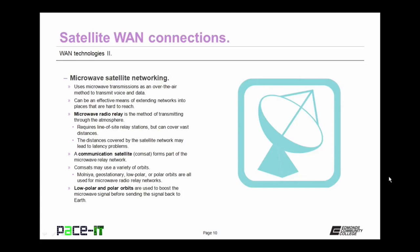Because of the distances that satellite transmissions can cover, this can lead to latency problems. The signal has to go from a terrestrial location up to the satellite, probably over to another satellite, and then down to another terrestrial station — that's a significant amount of distance and there's going to be some lag. Communication satellites, also known as commsats, form part of the microwave relay network. Commsats can use a variety of orbits, including the Molniya, geostationary, low polar, or polar orbits. The low polar and polar orbits are used to boost microwave signals before sending the signal back to Earth.